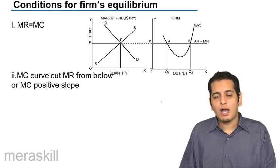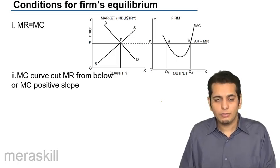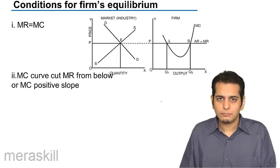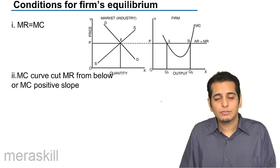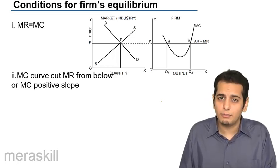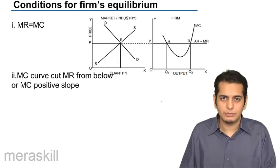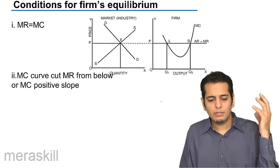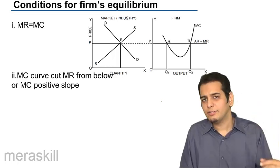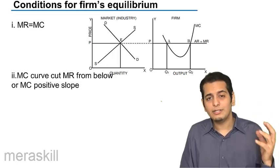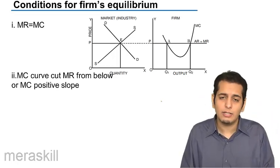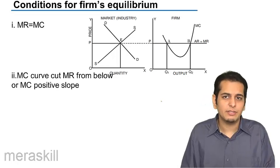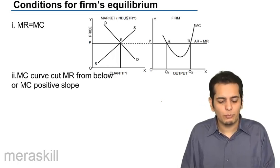Now, let's see how a firm gets to its equilibrium operating under perfect competition. How does a firm derive its equilibrium? What are the conditions which are necessary for its equilibrium?